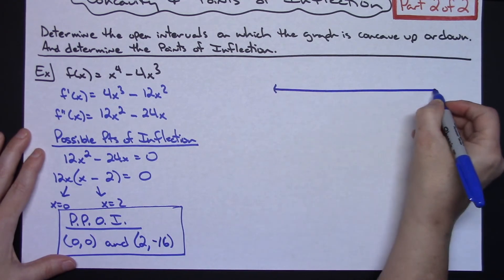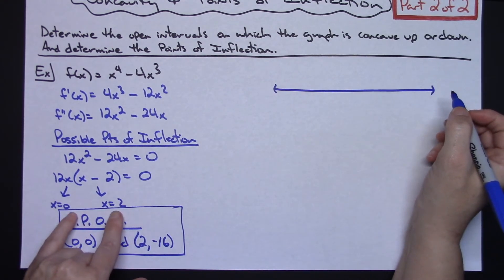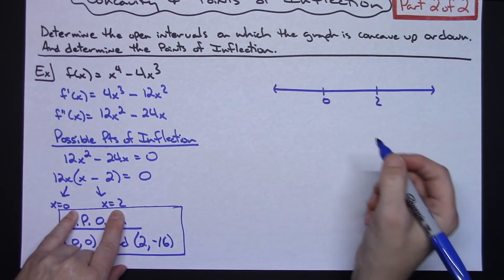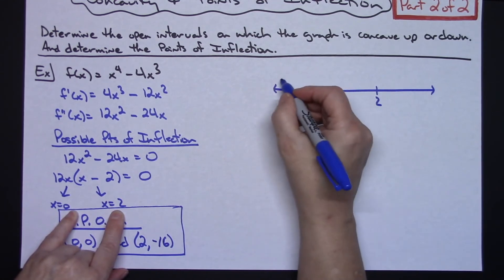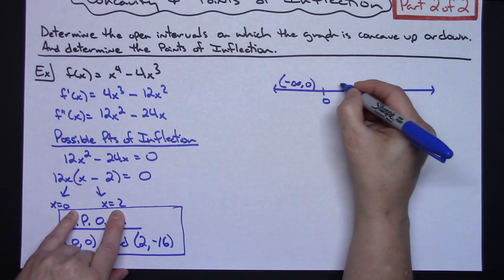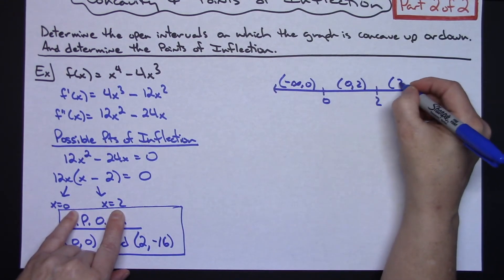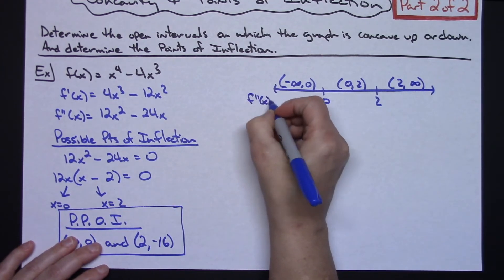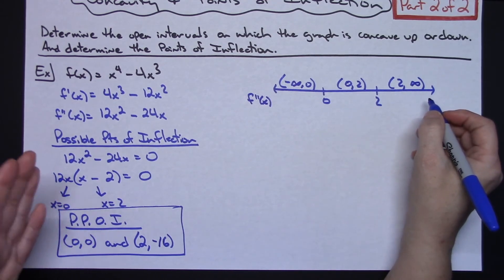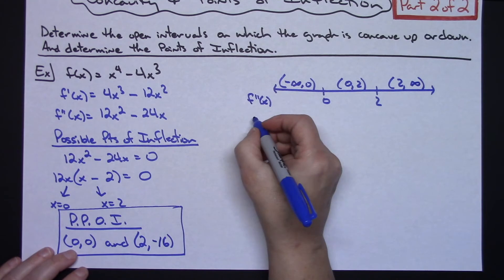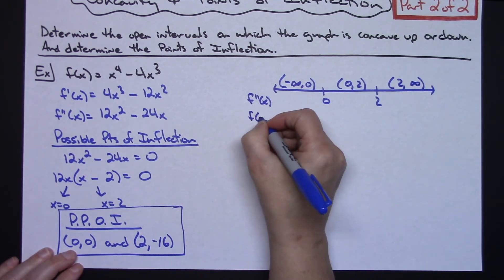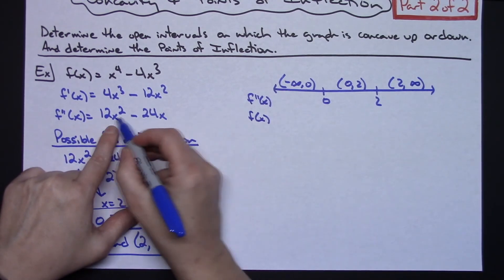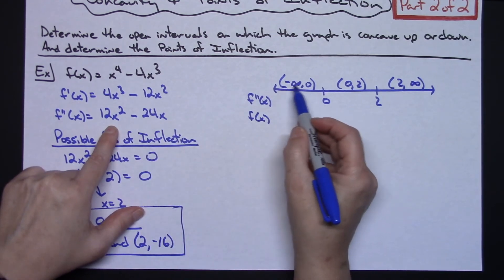I'll draw a number line and place these two possible points of inflection on it — zero and two. This creates three intervals: negative infinity to zero, zero to two, and two to infinity. I'm going to look at the second derivative on each interval to determine whether it's positive or negative, which will tell me the concavity of f on each interval.